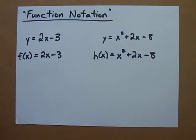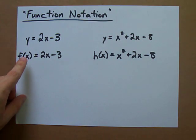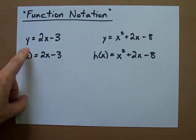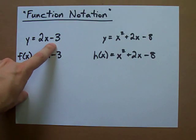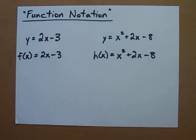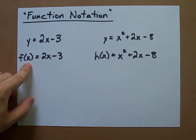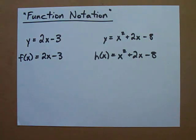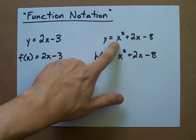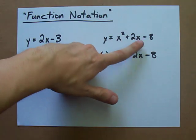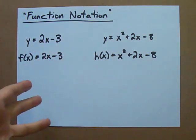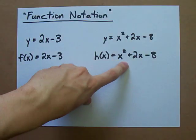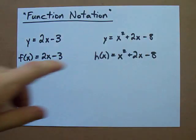It's just another way of writing y. If y equals 2x minus 3, you can the same way say f of x is 2x minus 3. If y is x squared plus 2x minus 8, then maybe h of x, if you want to call it that, is x squared plus 2x minus 8.